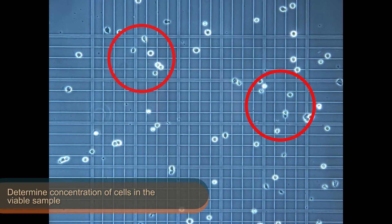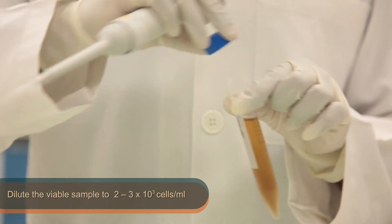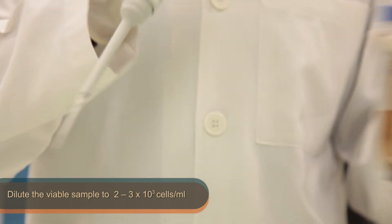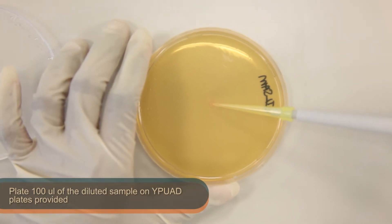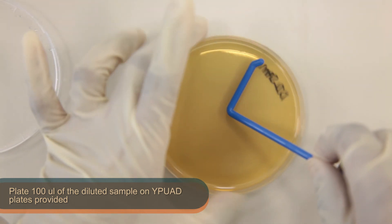Following this, determine the concentration of cells in the viable sample provided. Dilute the viable cells so that you have a sample of 2 to 3 × 10³ cells per milliliter. Plate 100 µL of the diluted sample on YPUAD agar plates provided.